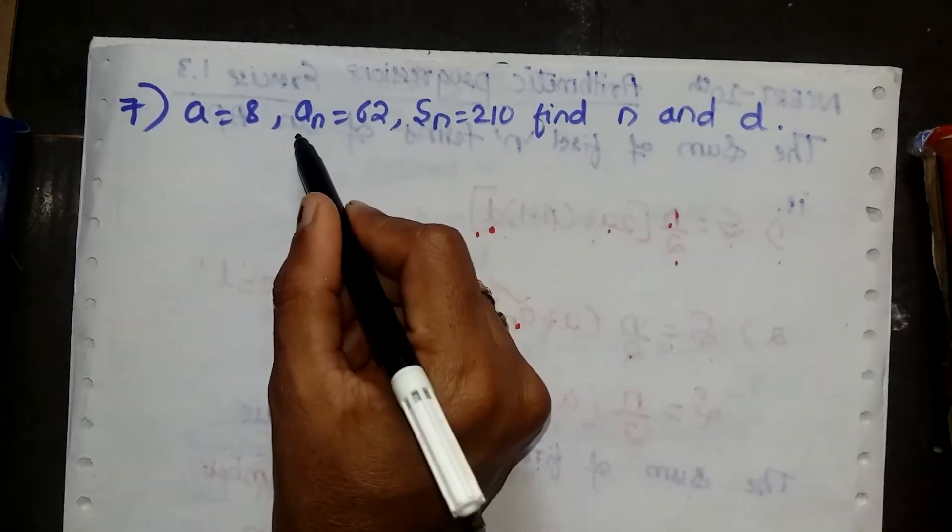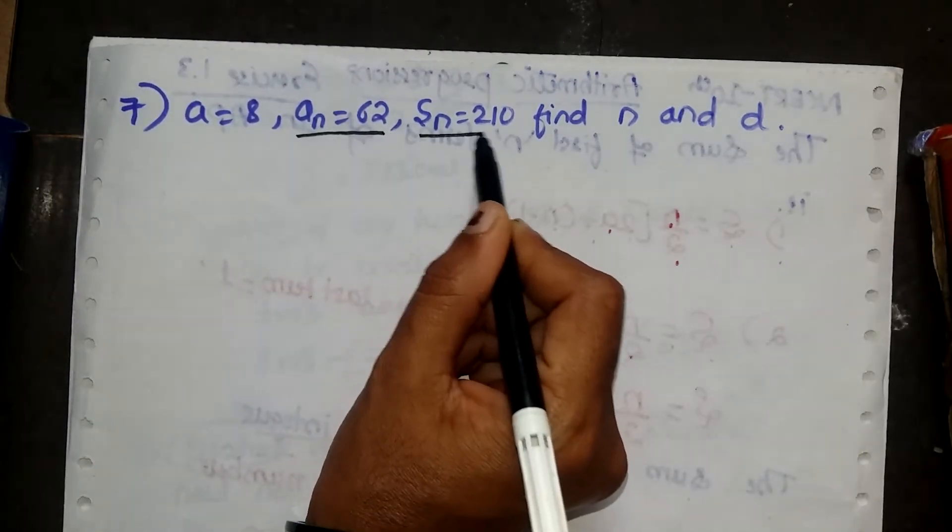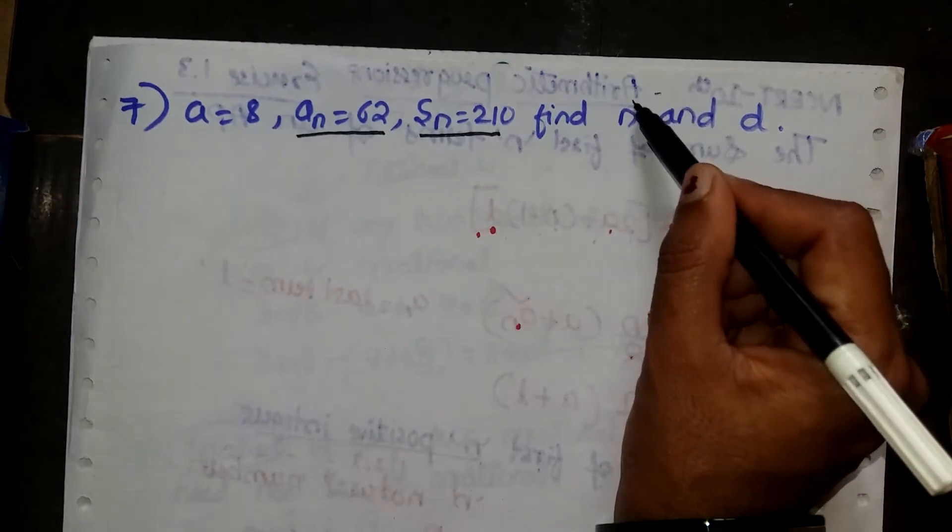A is 8, last term and Sn given. We need to find out n and d.